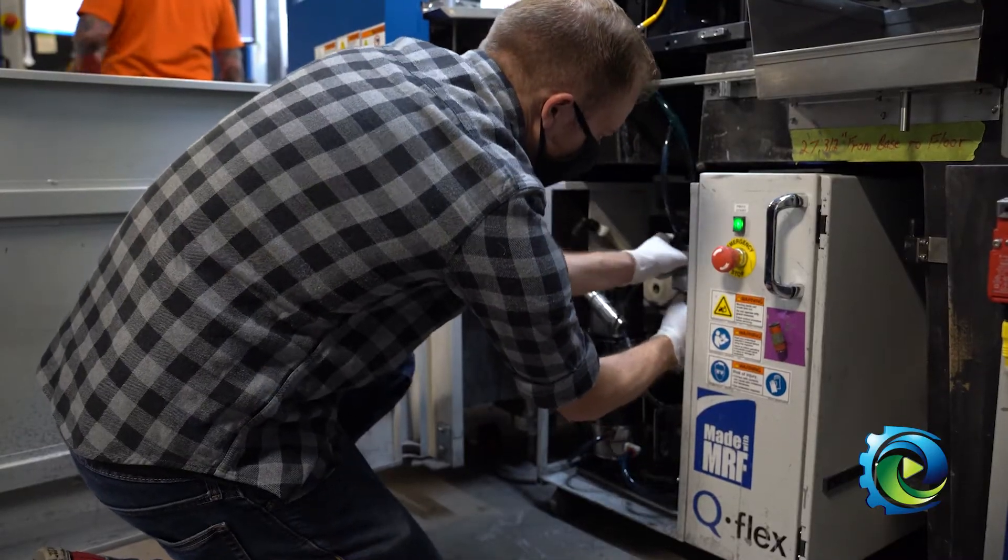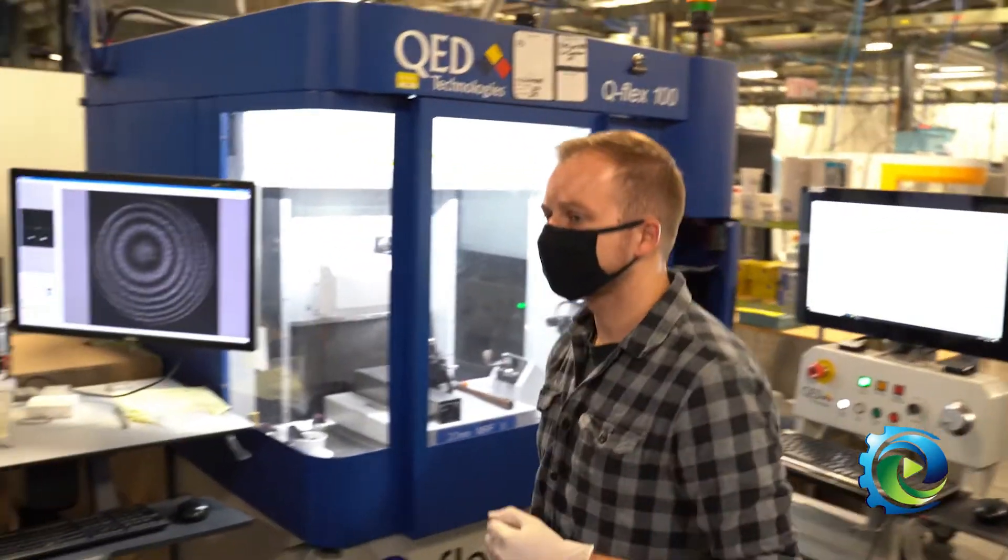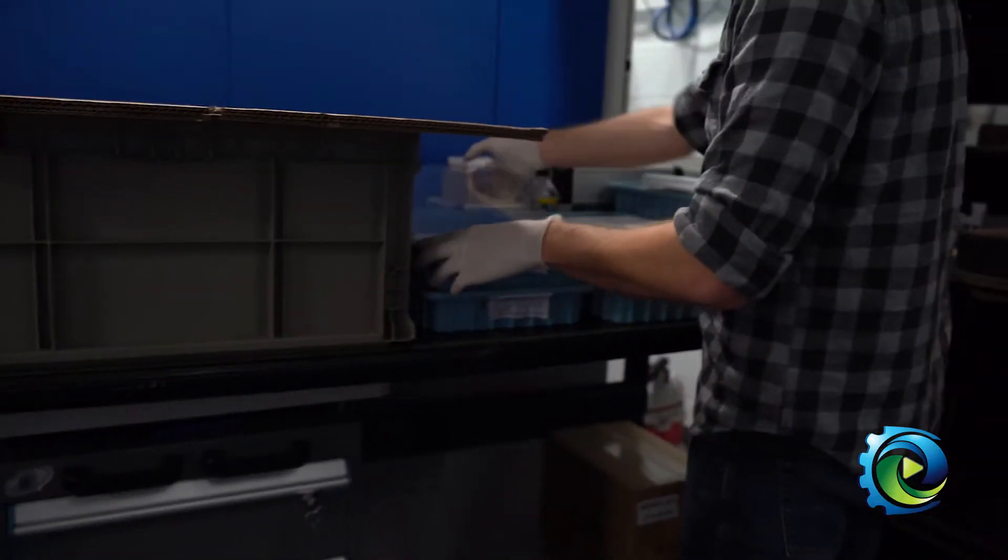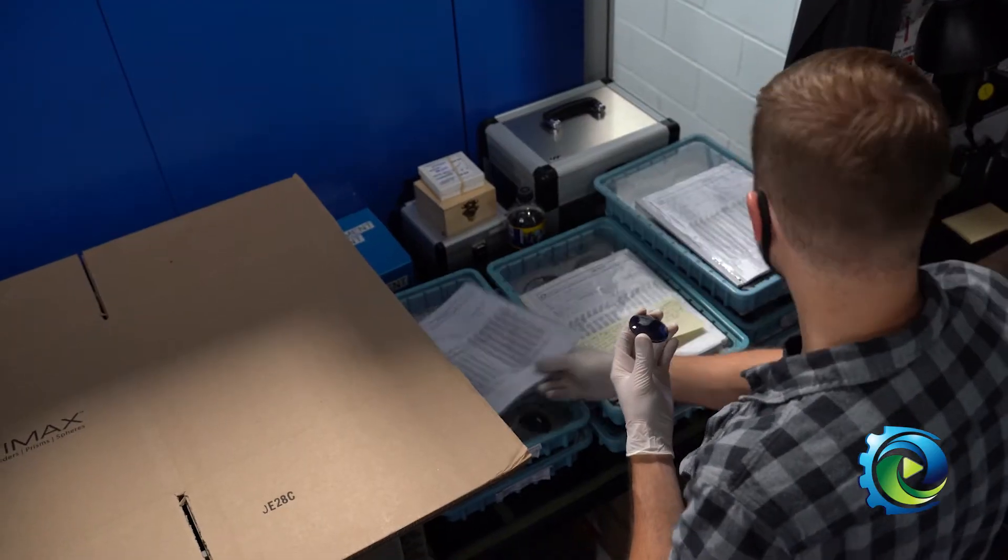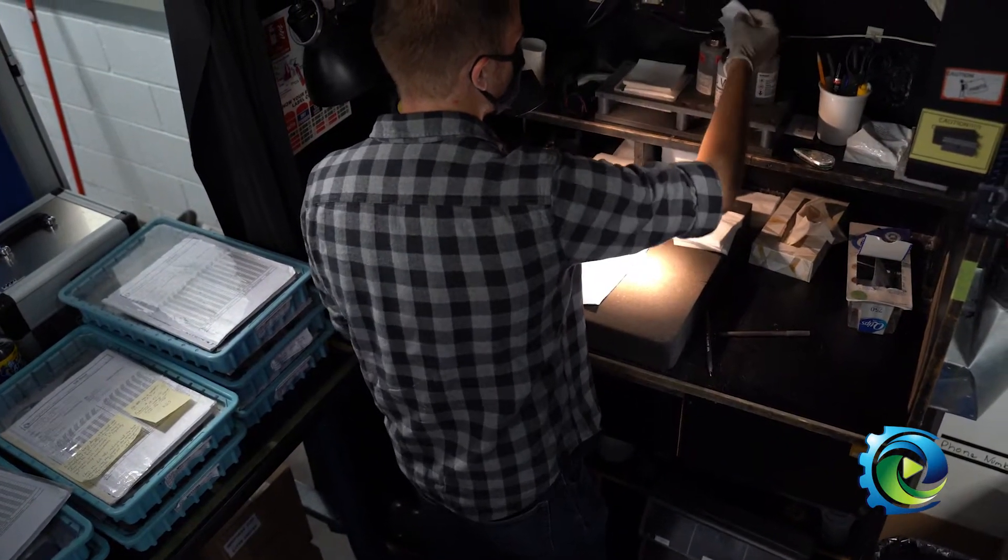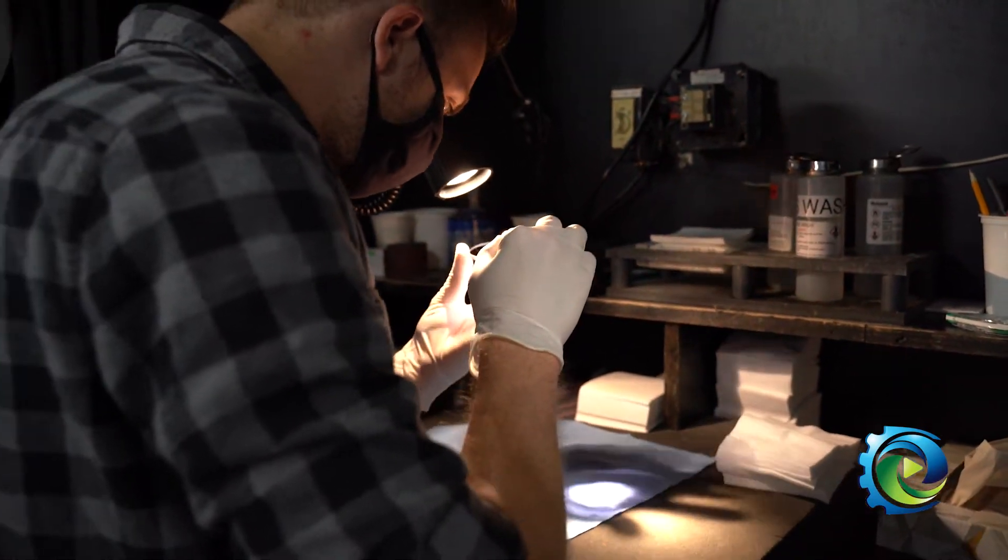We measure the lenses ahead of time and see that there are various highs and lows on the surface. The machine will selectively move the lens through the MRF fluid to wear down those highs to be even with the lows, so that when the machine is done, everything is very uniform and level and exactly what our customers are looking for.